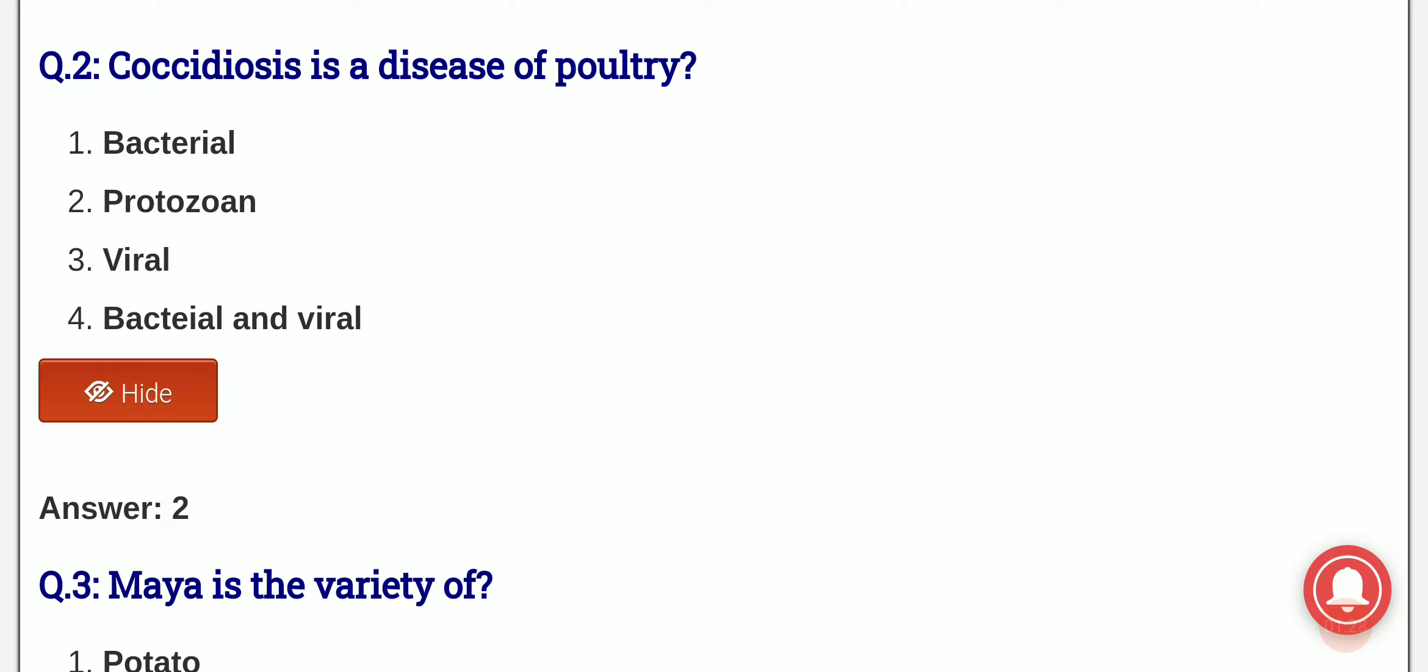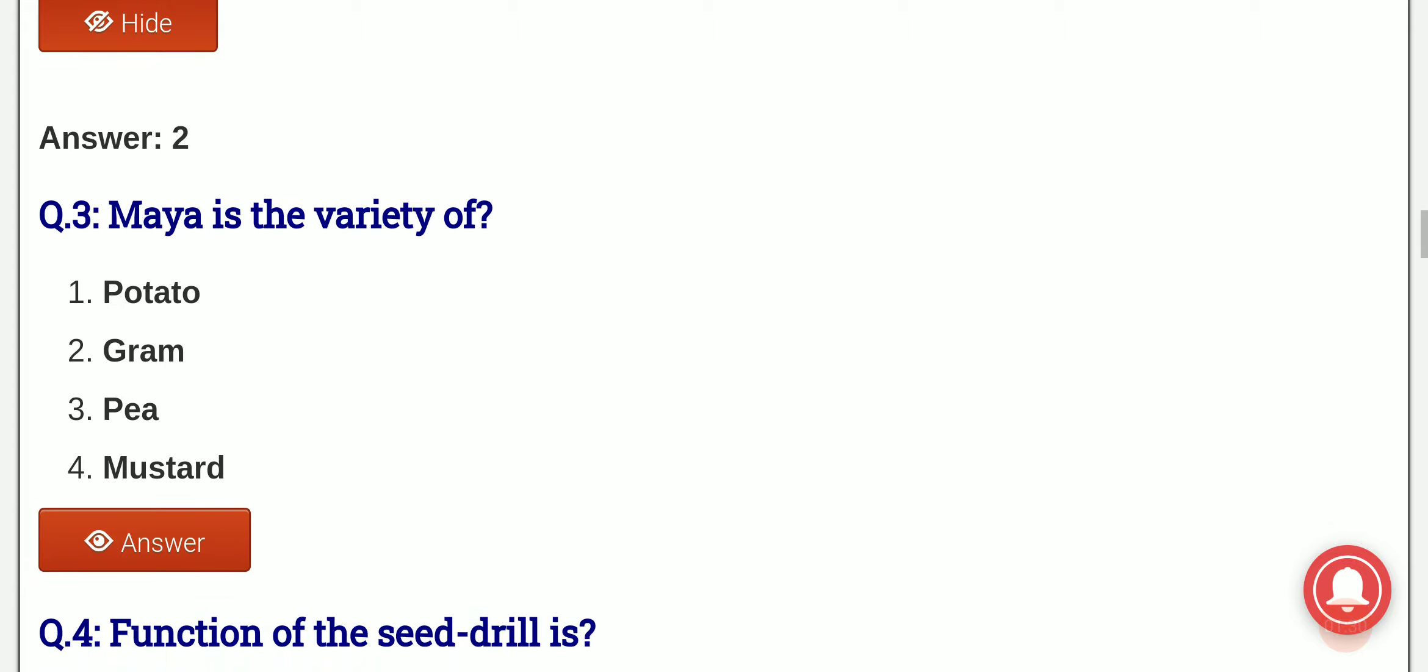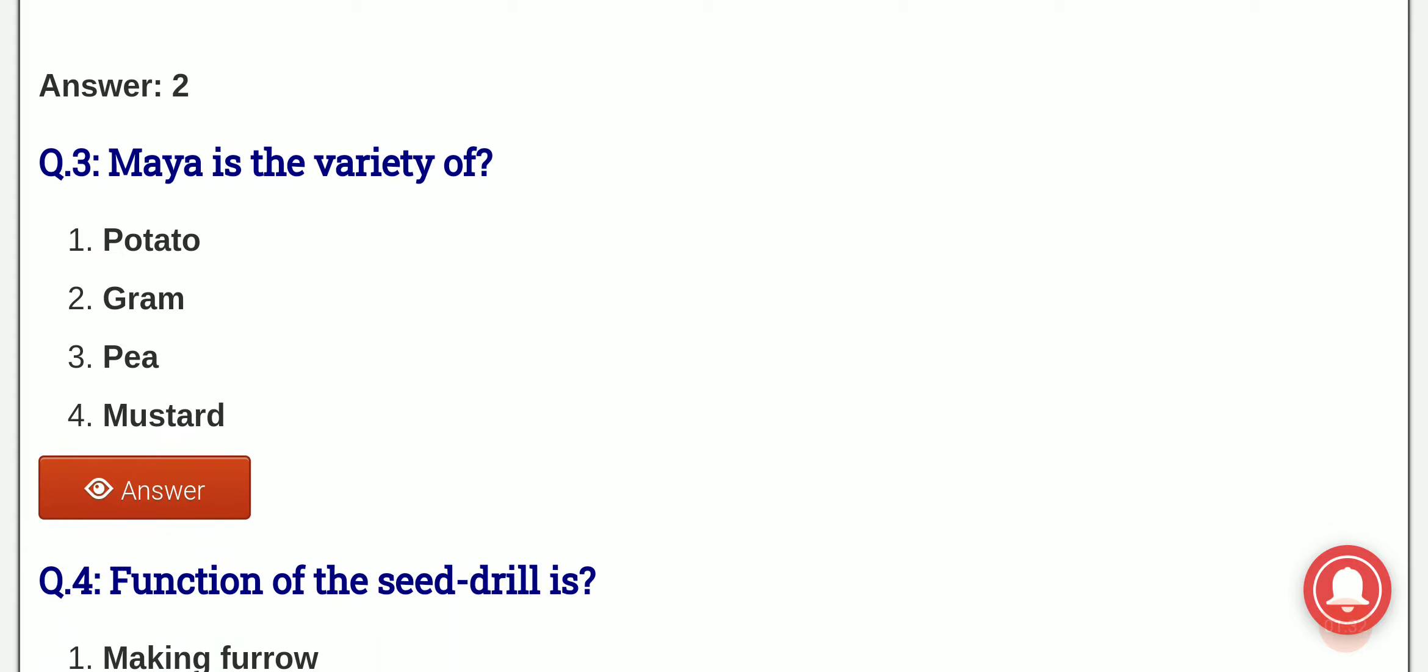Maya is the variety of which of the following crops? The options are potato, gram, pea, mustard. And the answer is option 4, that is Maya is a variety of mustard.